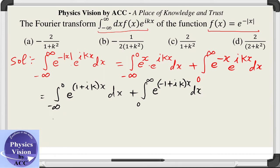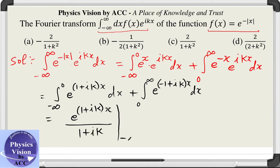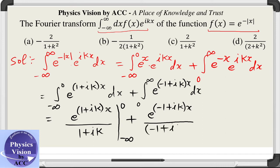Integrating, we get: the function e raised to the power (1 + iota k)x divided by (1 + iota k), with limits from minus infinity to 0. Similarly, the second term is e raised to the power (minus 1 + iota k)x divided by (minus 1 + iota k), with limits from 0 to infinity.